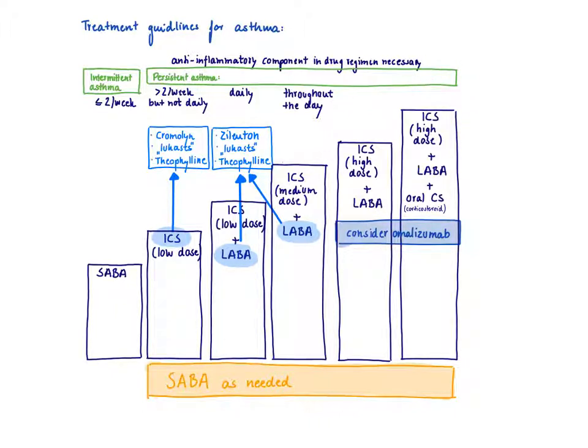Let's look at our treatment. Generally, you always start with a short-acting beta-agonist called a SABA, which would be albuterol, and you just take it as needed. As long as you don't need it more than twice a week, this is okay. But then if you're going to have persistent asthma, you need some anti-inflammatory component in the drug regimen. Generally, you would start with an inhaled corticosteroid, ICS, with a low dose.